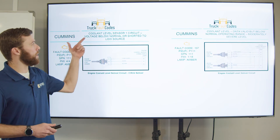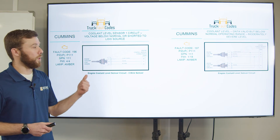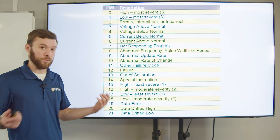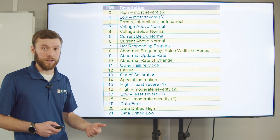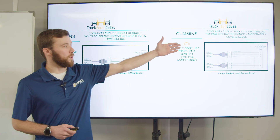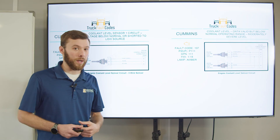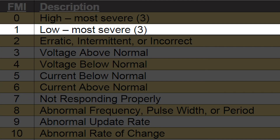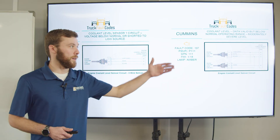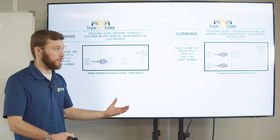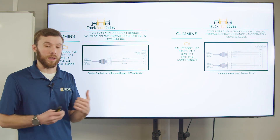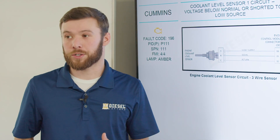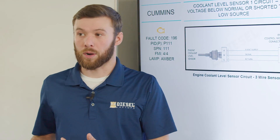Let's look at one more example. Here we have our coolant level sensor circuit — 'voltage below normal or shorted to low source' — FMI four, voltage below normal. We can tell that's an electrical fault, which could be the sensor, the harness, or the module monitoring it. If we look at this other one, we see coolant level 'data valid but below normal operating range' with FMI one. Going back to the FMI list, FMI one is 'low, most severe level,' so this is telling us that our coolant level is actually too low. In simple terms, this is how we tell the difference between electrical and mechanical faults — just by looking at the FMI code, even without a full description, you can tell what's going on.